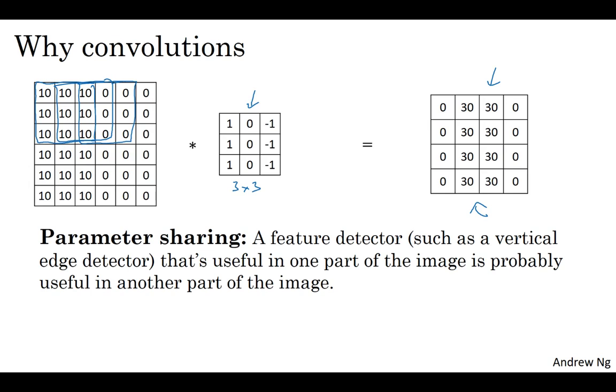And it also just seems intuitive that a feature detector, like a vertical edge detector, computed for the upper left-hand corner of the image. The same feature seems like it will probably be useful, has a good chance of being useful for the lower right-hand corner of the image.